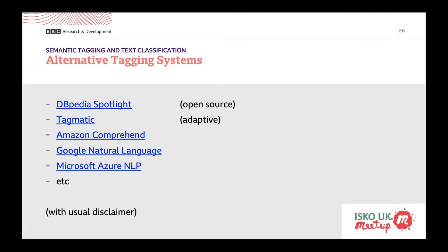Finally, all the big cloud companies have NLP services which include tagging for text — Amazon Comprehend, Google Natural Language, and so forth. I've only had a quick look at these systems, so I can't make any recommendations and I've probably missed out competing products — the usual disclaimer. But basically they all do a reasonable job of tagging text, so they're really useful.